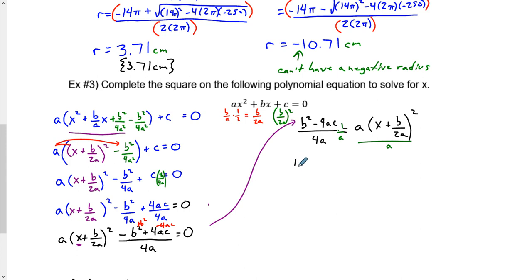This would actually be b squared subtracting 4ac all over 4a squared, and it would equal x plus b over 2a squared. Now we're going to take the square root.